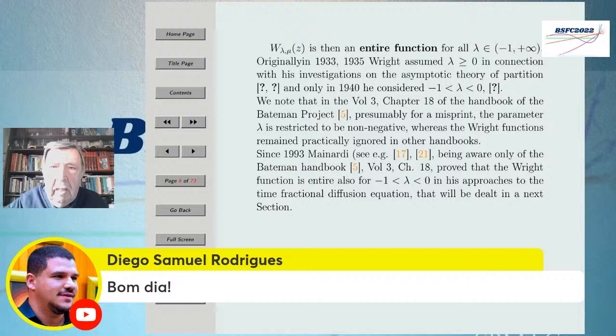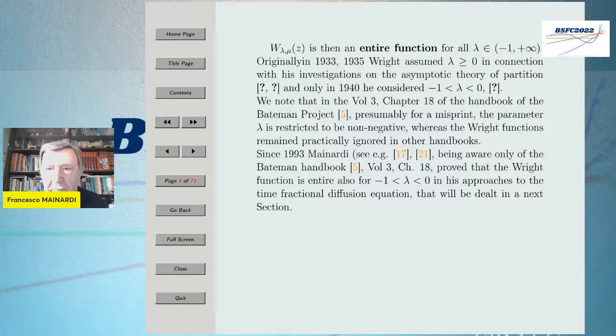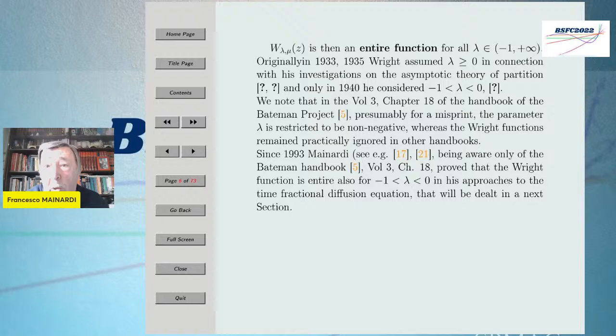Wright introduced this function in partition theory for lambda positive or non-negative, but then in 1940 he also considered negative lambda. I learned this from the Bateman project, where probably due to a misprint the negative lambda was not considered. So when I introduced this function I thought I had invented a new function, because I proved as an exercise for students that it is entire — but this was also done by Wright in 1940, just not reported officially in the handbook, which was my main source.